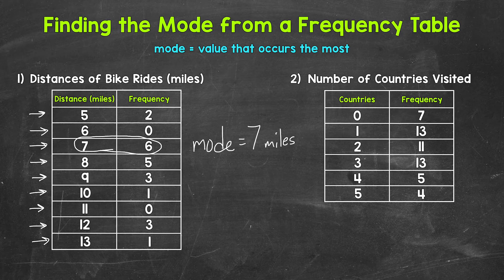Let's move on to number 2, where we have a frequency table displaying the number of countries visited. And these are the countries outside of the country you were born in. So let's say that a group of people were asked the number of countries they have visited outside of the country they were born in. These are the results.